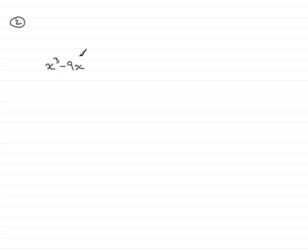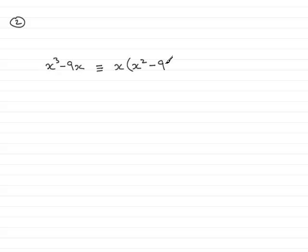In these two terms, you should notice that x is a common factor. And don't forget to put an identical sign. So this is identical to x bracket, and then we have x squared minus 9. So when you expand this, you'll get x cubed minus 9x.